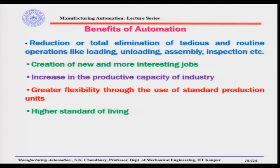What are the benefits of automation? First, the reduction or total elimination of tedious and routine operations like loading, unloading, assembly, and inspection — these are very tedious and human beings get tired of them quickly. Automating these processes reduces unnecessary time-consuming work and increases productivity. Second, automation creates new and more interesting jobs of higher skill. In future, production will have fewer operators and more people involved in management, design, and end-product development.